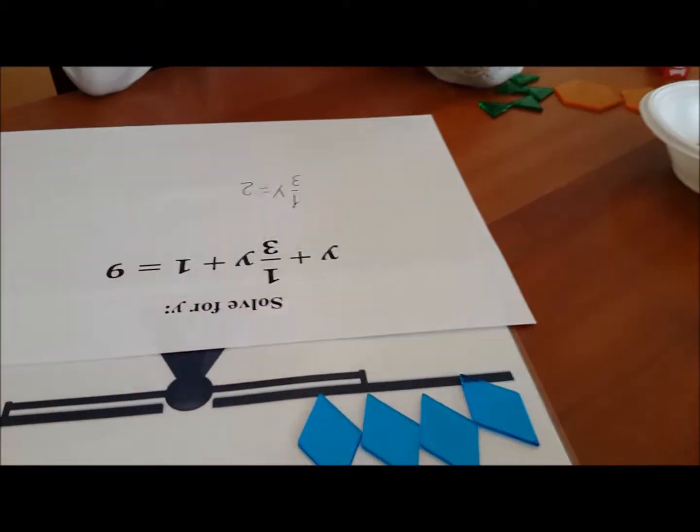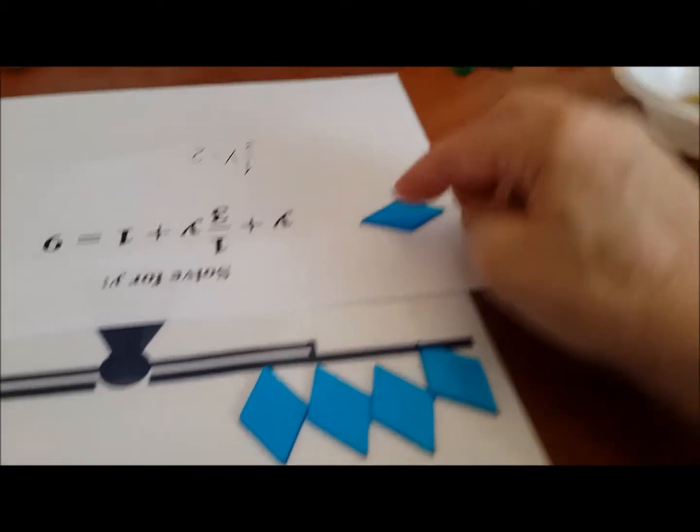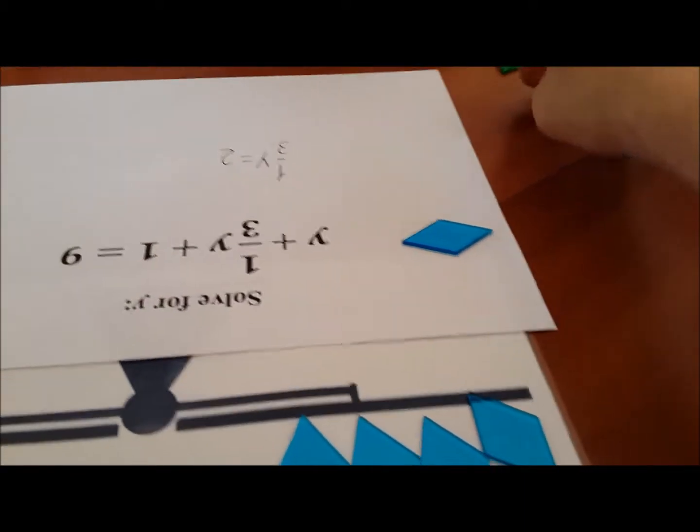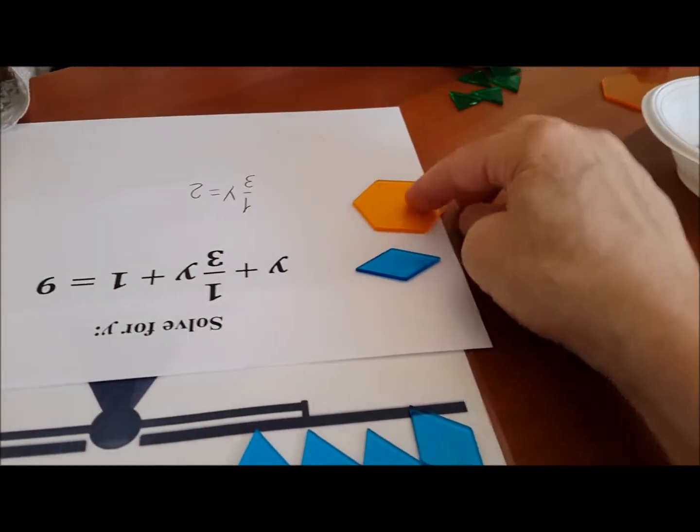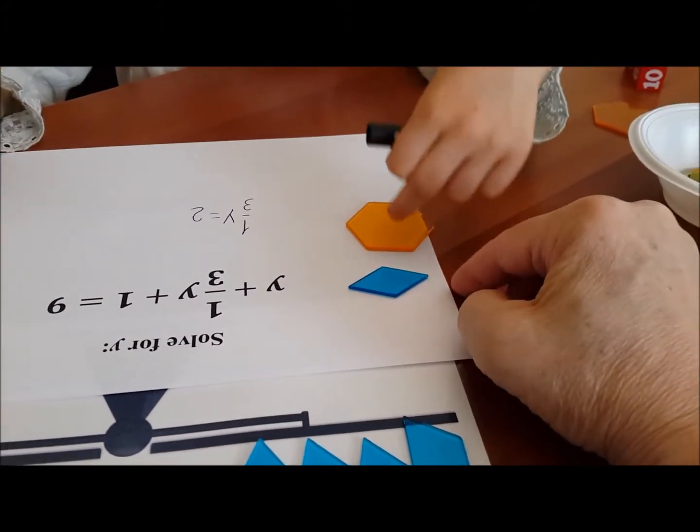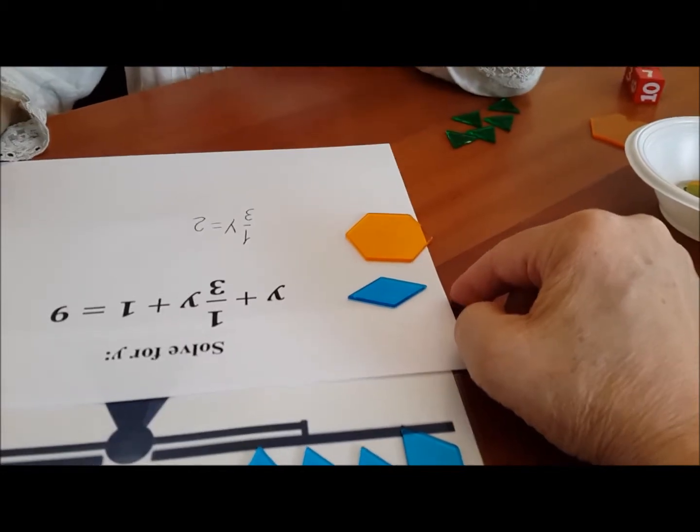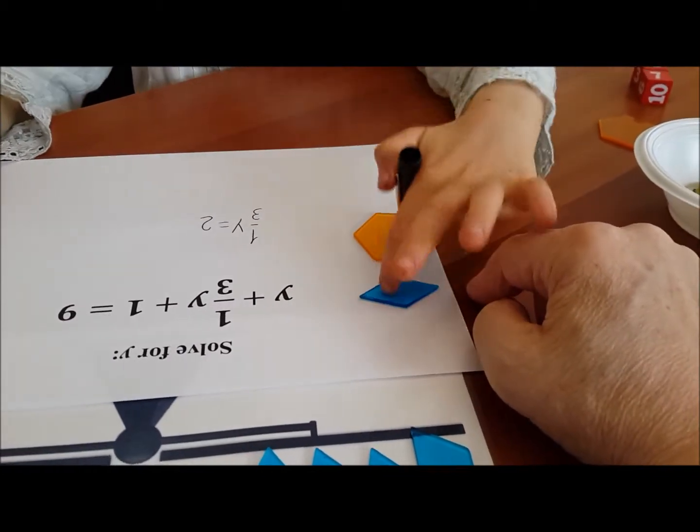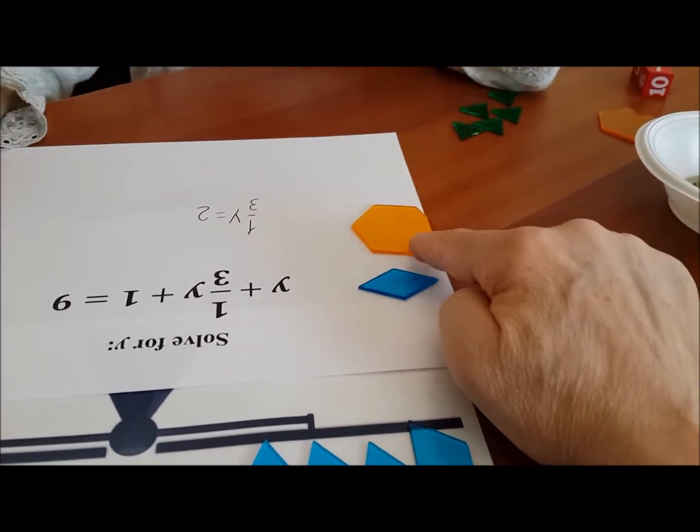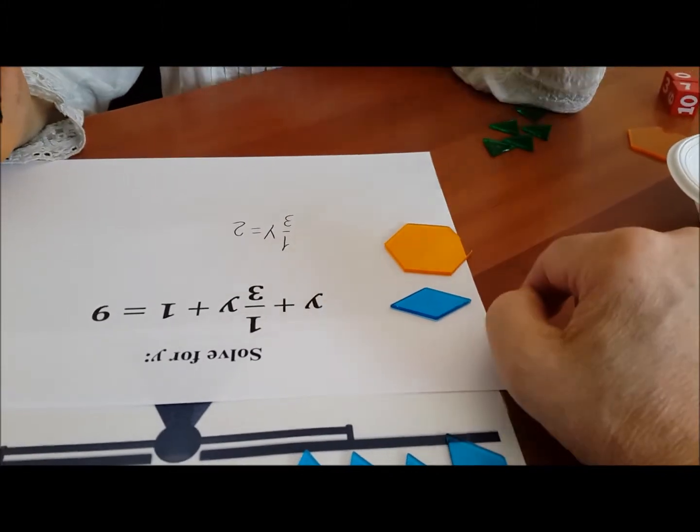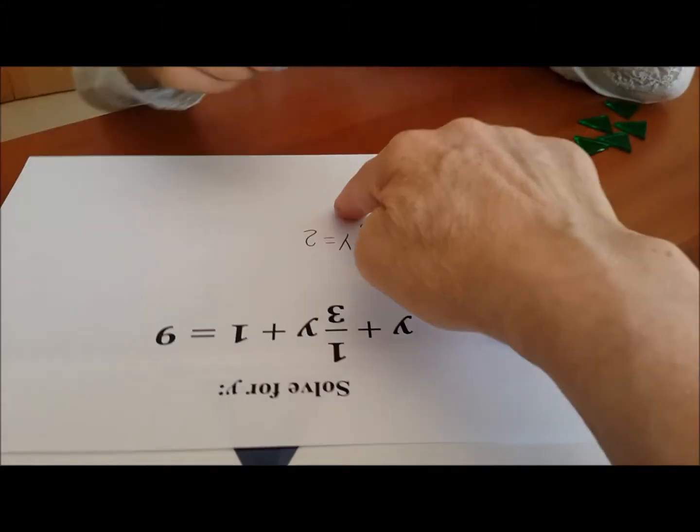Now, we need to solve for y. So the question is this. If the blue block is two, what would the yellow block be? Six. How do you know? Because three of the thirds fit on y. Say it again. Because three of those fit on y. Three of those fit here. Yeah. And each of them is two, so it would be six. Okay, please write down y equals six.